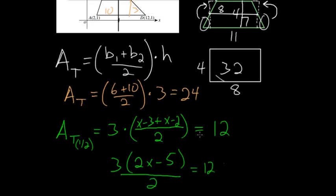And now, simplifying, we can multiply each side by 2, and then divide by 3. So what we're left with is that 2x minus 5 equals, so 12 times 2 is 24, divided by 3 would give us 8.